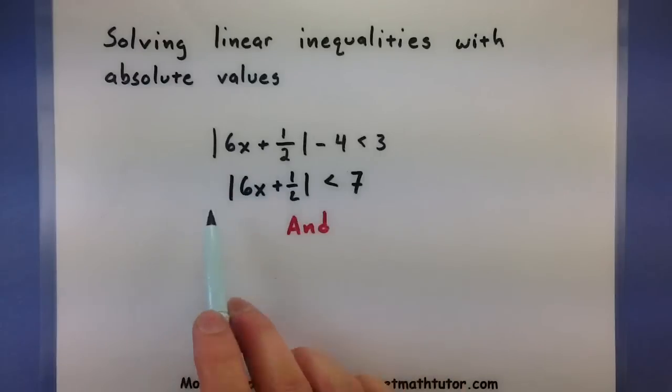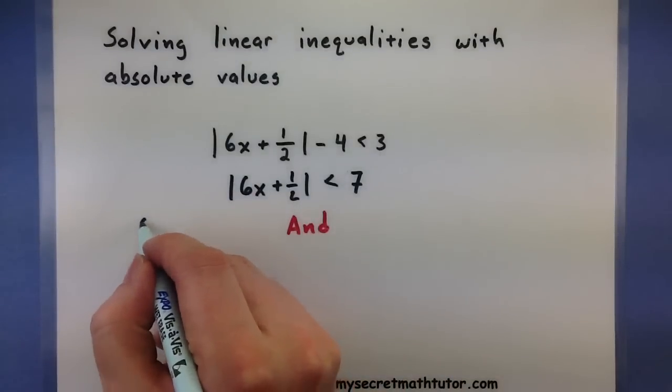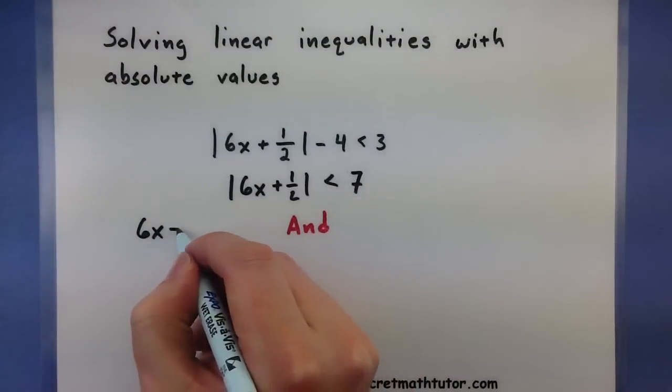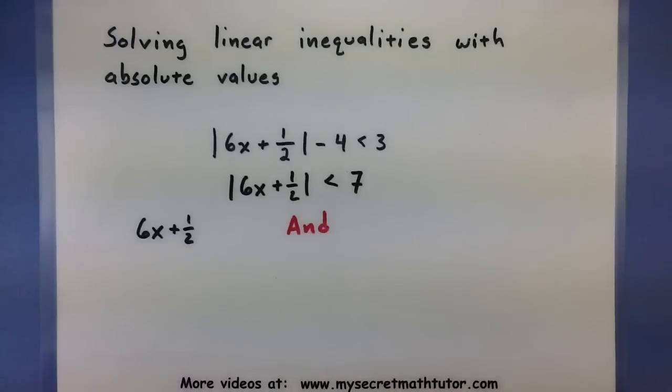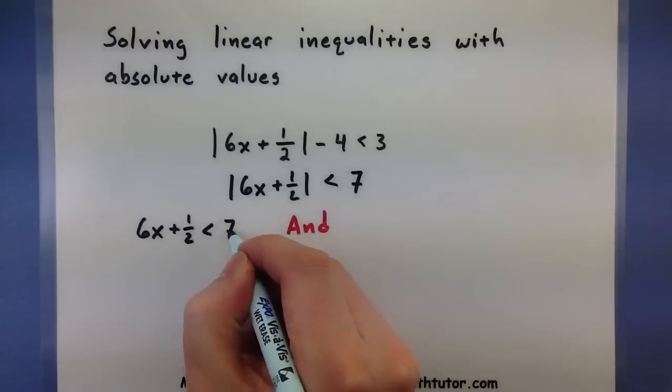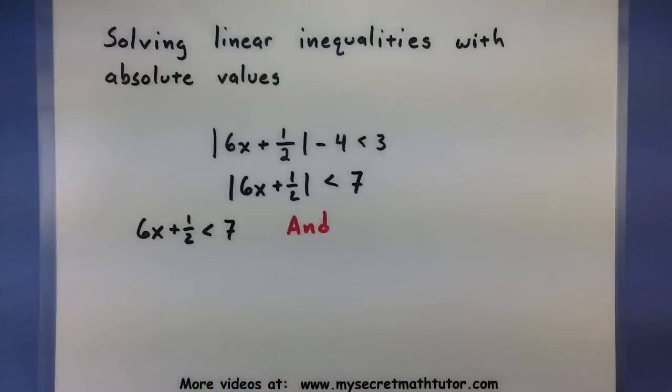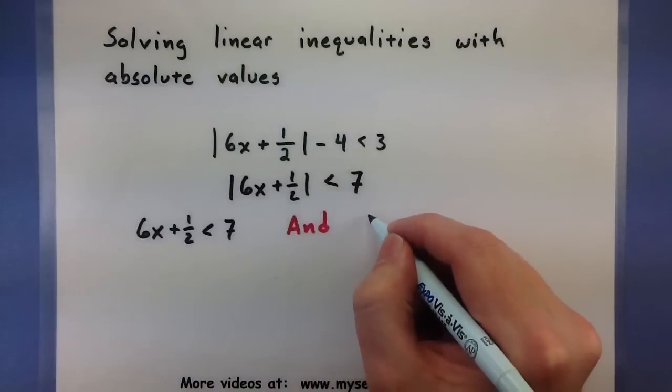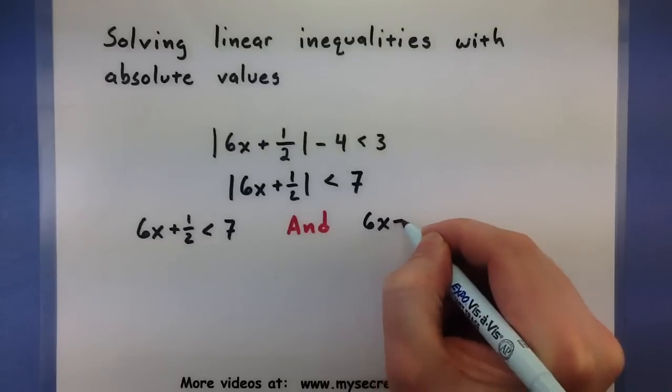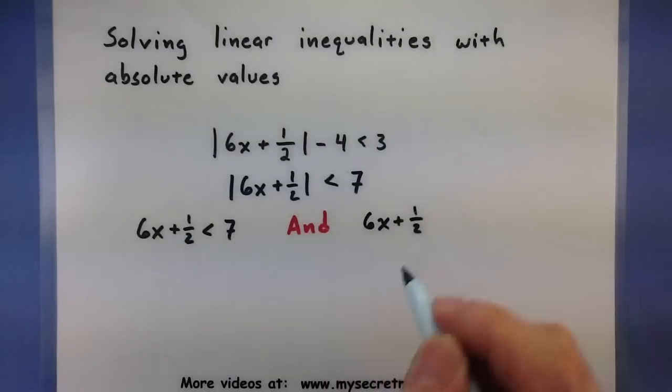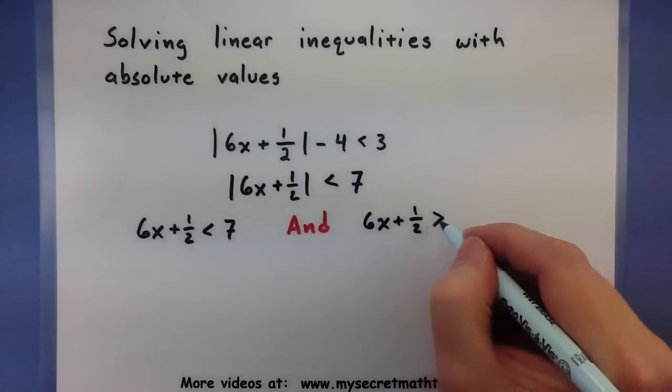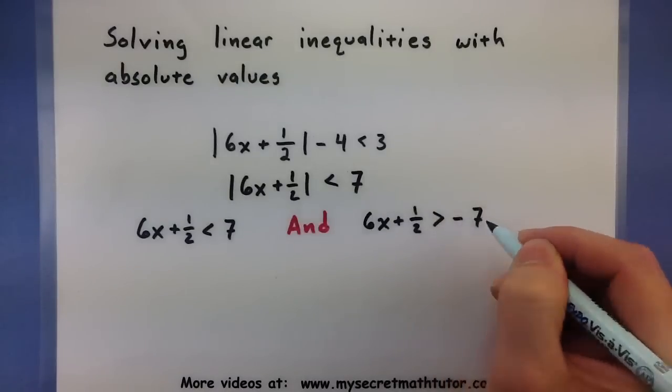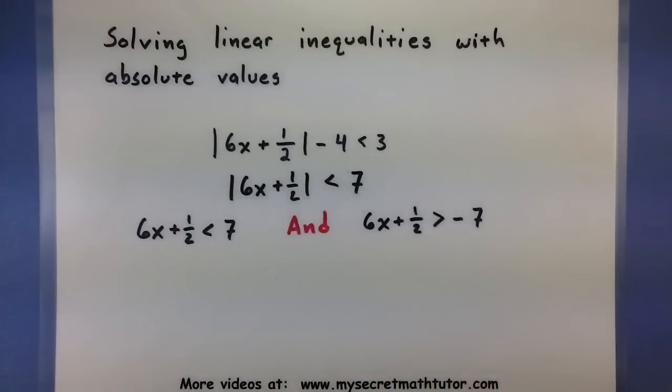Because of this absolute value, I know that maybe the 6x plus 1 half, maybe that guy turns out to be positive, and there's not going to be really any changes. However, maybe this guy on the inside was actually negative. And if it was, then I'm looking at it being greater than a negative 7. So these are the two problems that I now need to solve. Let's go ahead and do that.